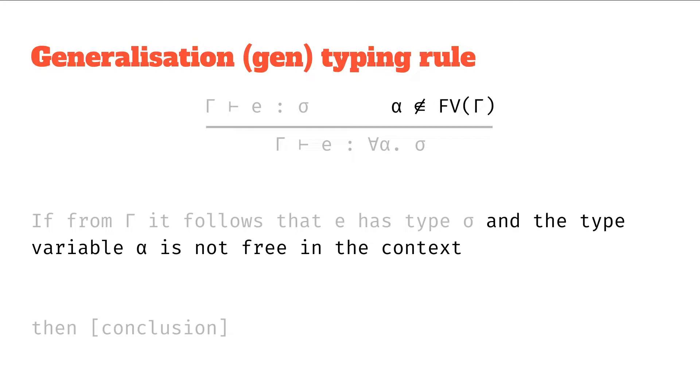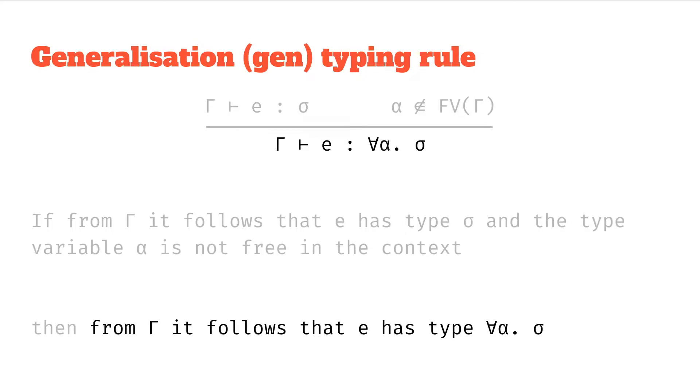So provided that from the context gamma it follows that E has type sigma, and the type variable alpha is not free in the context, then we have the conclusion holding, which is from the context gamma, it follows that E has type for-all alpha sigma. So we're just adding that for-all alpha to the sigma type, because we already knew that E had type sigma.